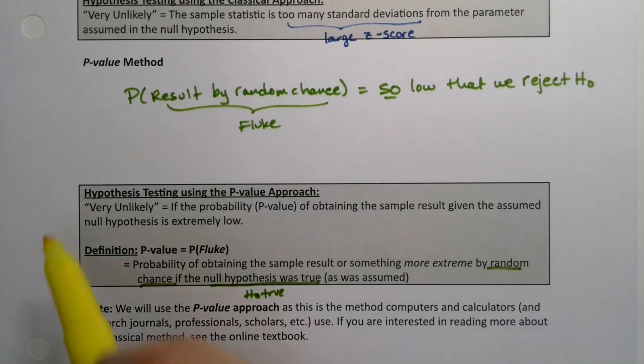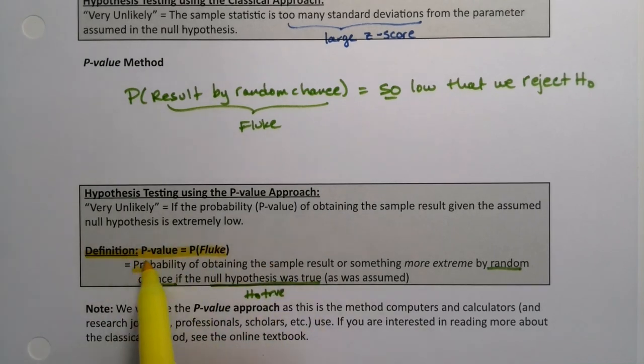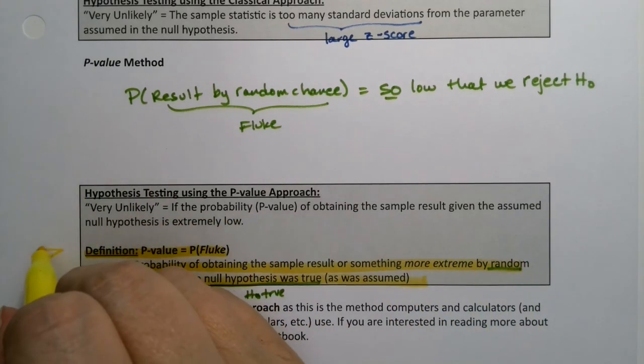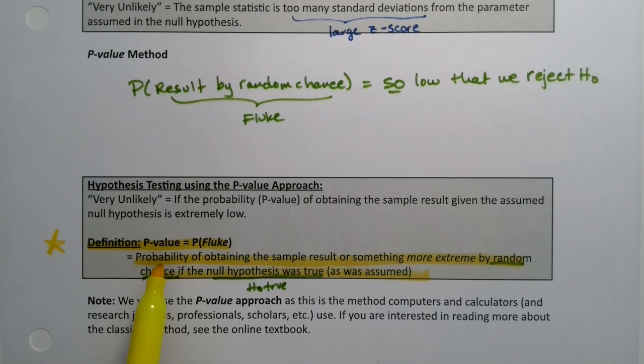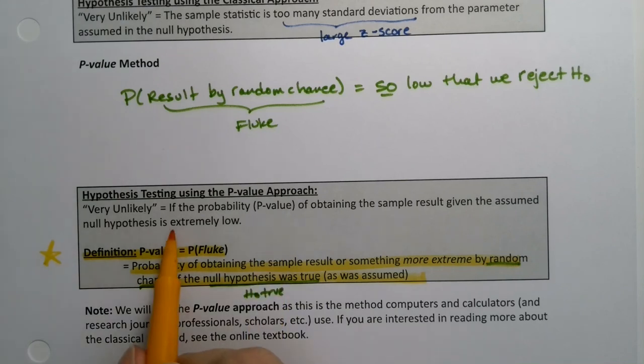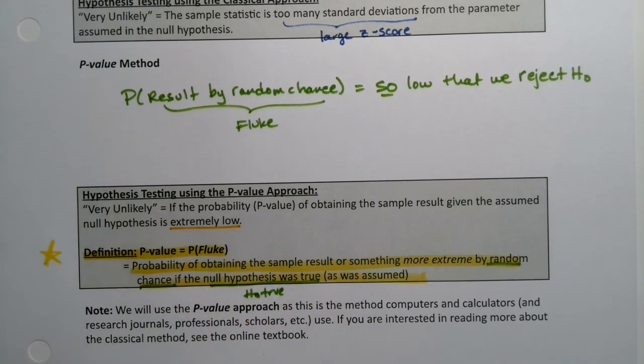But always remember that the p-value, which is the way we are going to work most of the time, we reject when our results are very unlikely. That very unlikely will be when the p-value is very low. If your p-value is extremely low, then you will reject H₀.